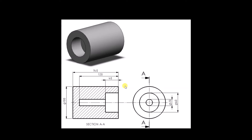There are two extruded cuts inside the cylinder. The first one has a depth of 40 mm and a diameter of 60 mm. The second one has a depth of 120 mm from the top surface and a diameter of 20 mm. Let us go ahead and start sketching the drawing.